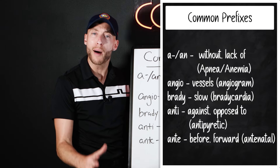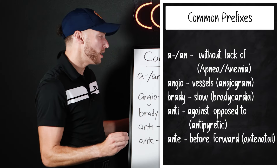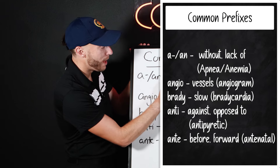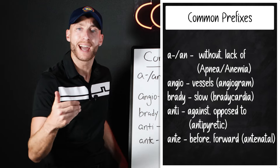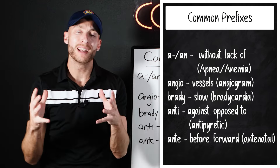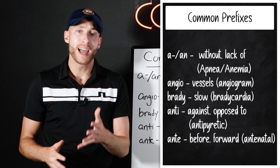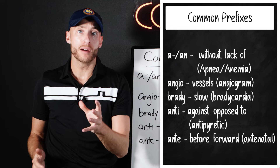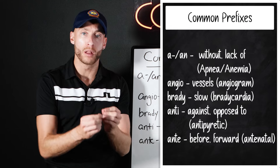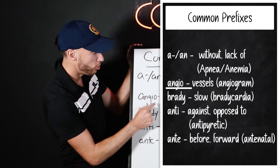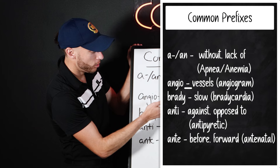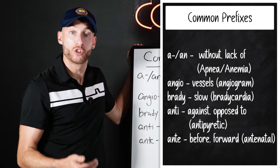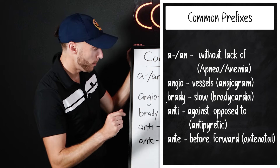Here are some of the most common prefixes that you'll see. 'A' or 'an' means without or lack of, like apnea or anemia. Apnea means without breath. Anemia means lack of blood. Moving from there, 'angio' talks about vessels, like an angiogram, which is a study of vessels.